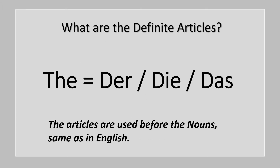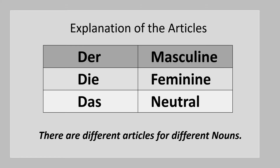There are three definite articles: der, die, and das. They all mean the same in English, which is 'the.' The articles are used before the nouns, same as in English. Der is used for masculine gender nouns, die is used for feminine gender nouns, and das is used for neutral gender nouns. There are different articles for different nouns.